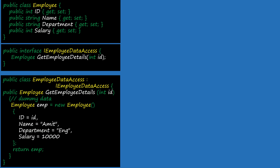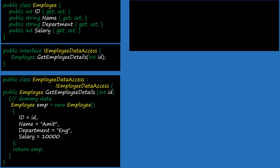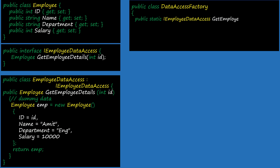Let's refactor the next class, DataAccessFactory: public class DataAccessFactory. This class has one method getEmployeeDataAccessObject. Previously we were returning directly an object of EmployeeDataAccess. Now we change the return type to IEmployeeDataAccess, and similarly return new EmployeeDataAccess. Our DataAccessFactory class is ready.